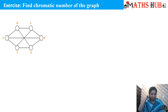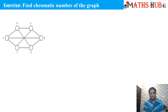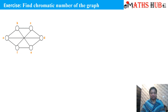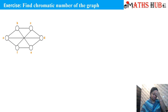So let's see how to find out the chromatic number. This is a graph — you can see the vertices are marked by the alphabets A, B, C, D, E, and F. We need to find the chromatic number, that is, the number of colors required to color this graph in such a way that no adjacent vertices bear the same color.